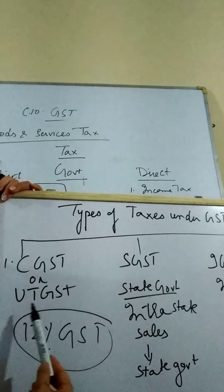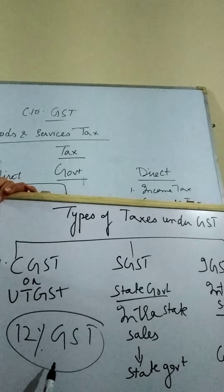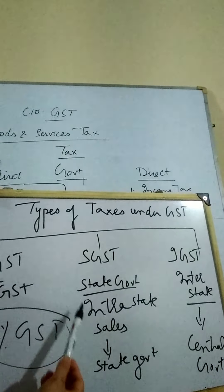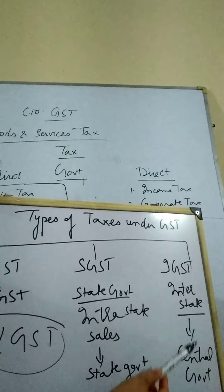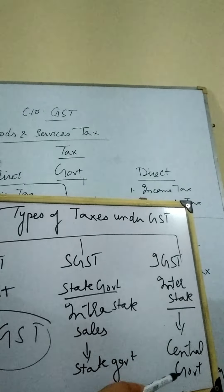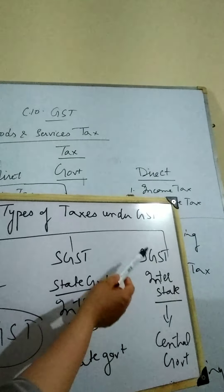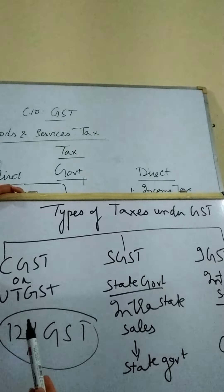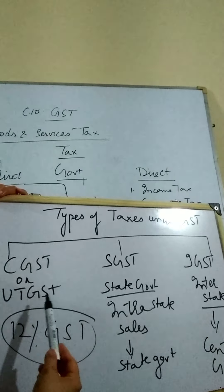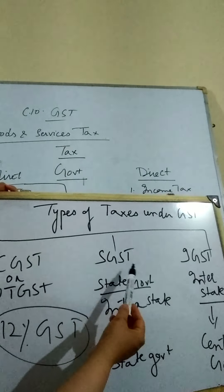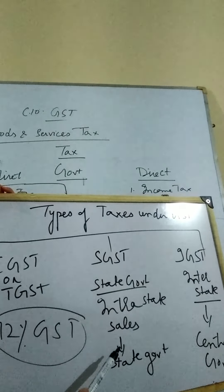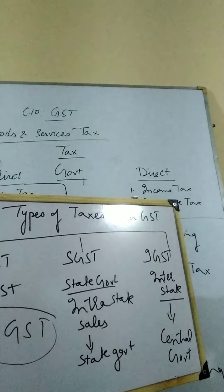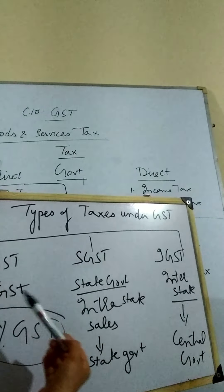Let us recall all these taxes once more. CGST is for the Central Government, or UTGST for Union Territories, and it automatically goes to the Treasury of the Central Government. SGST is the tax imposed by the State Government on intrastate sales or purchases. IGST is a tax levied by the Central Government on interstate transactions — when commodities are sold between two states, the Central Government charges IGST. The amount of SGST goes into the Treasury of the State Government.